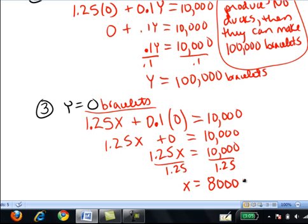Y is the number of bracelets. X is the number of ducks. So this tells us when Acme makes 0 bracelets, they're able to make 8,000 ducks.